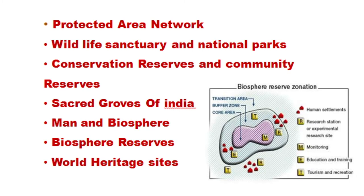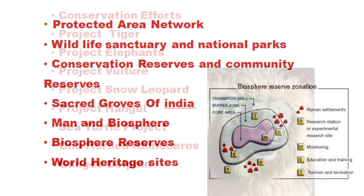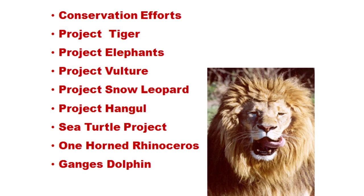Let us take a review of conservation efforts. Indian and state governments take different types of efforts to conserve animals and plants. In this topic, we study conservation efforts like Project Tiger, Project Elephant, Project Vulture, Project Snow Leopard, Project Hangul, Sea Turtle Project, One Horned Rhinoceros and Gangetic Dolphin. Students must study each project's establishment dates, nature of the project, and the animals it aims to conserve.